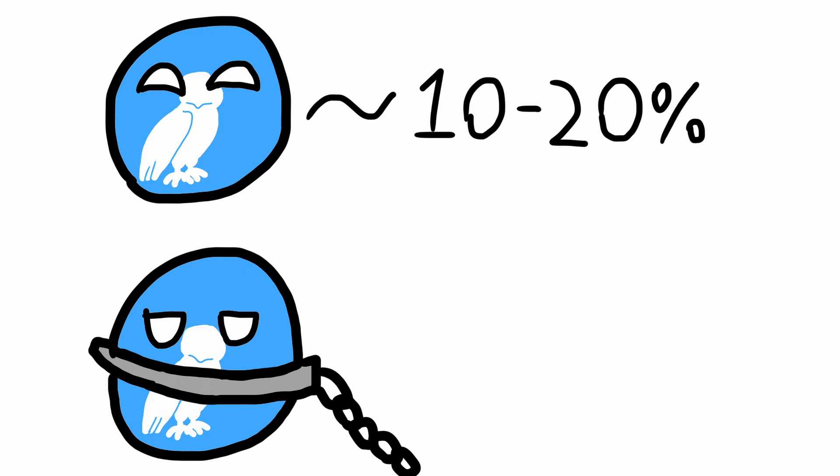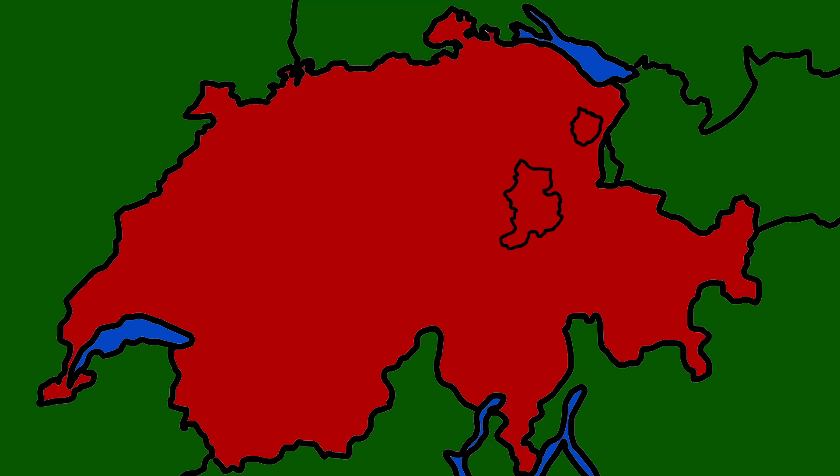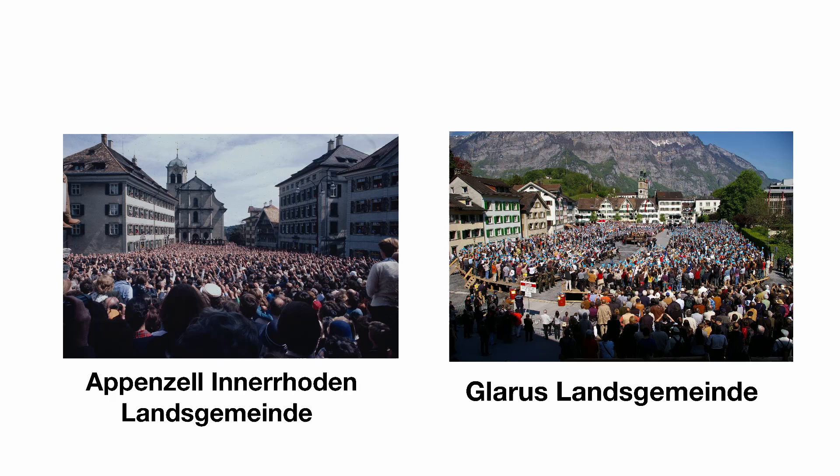For reference, some estimates put the number of slaves at around 100,000 in Attica, which was more than the number of eligible citizens. An example of modern direct democracy in action is Switzerland. The Swiss government is considered a semi-direct democracy — representative first, but with strong instruments of direct representation. In two Swiss cantons, Appenzell Innerrhoden and Glarus, the institution heading canton affairs is the Landsgemeinde, or the Cantonal Assembly.